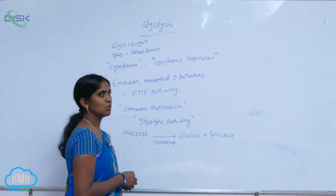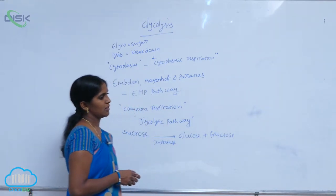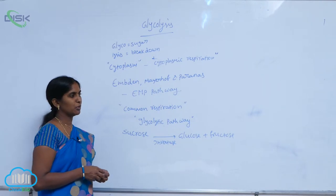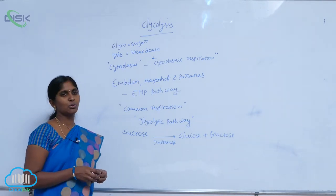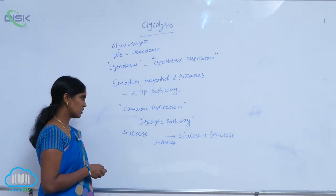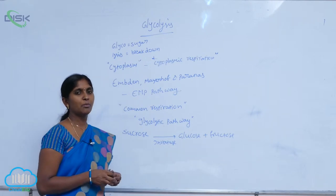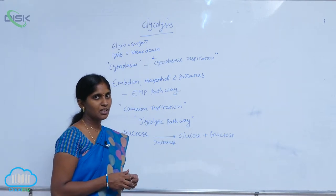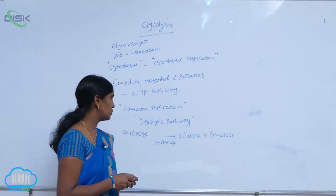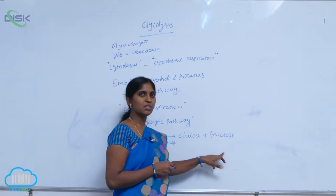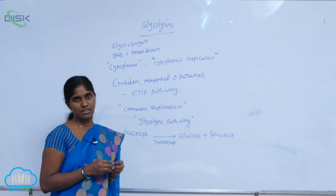The source of glucose in plants is the end product of photosynthesis, that is sucrose. The sucrose is stored in the form of starch that is hydrolyzed into glucose and fructose in the presence of enzyme invertase.